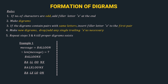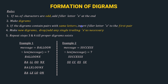In example 2, the message is 'success'. The length is 7 — odd — so we add X at the end: 'successx'. Step 2 — make diagrams: SU, CC, ES, SX. Step 3: we have a pair with same letters — CC. So we insert X between the two C's: SU, CXC, ES, SX. Step 4: re-pair to get SU, CX, CE, SS, and a trailing single X, which we drop.